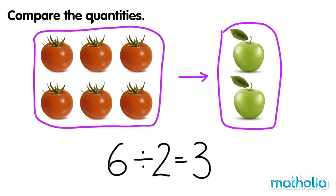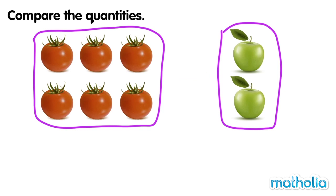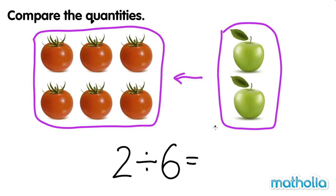We can also compare the number of apples to the number of tomatoes. Two divide six equals one third. The number of apples is one third the number of tomatoes.